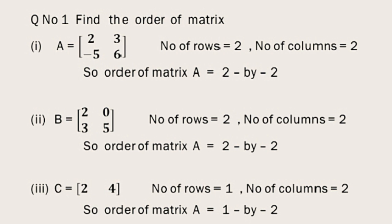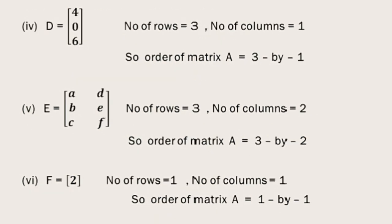The next one also same, 2 by 2. The third matrix C: only one row with elements 2, 4, so 2 columns, 1 by 2 will be the order. The next matrix is D: 4, 0, 6. One column but rows are 3, so its order will be 3 by 1.